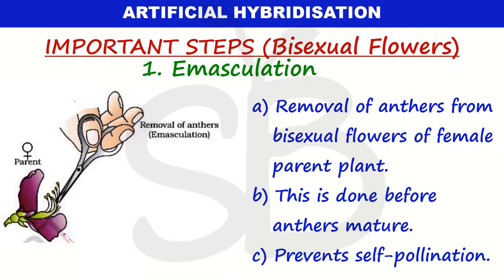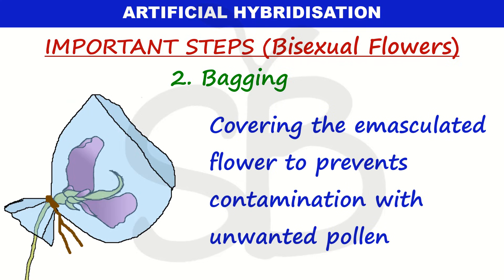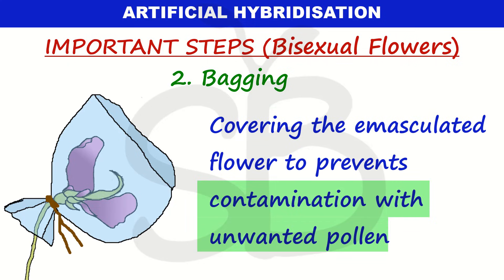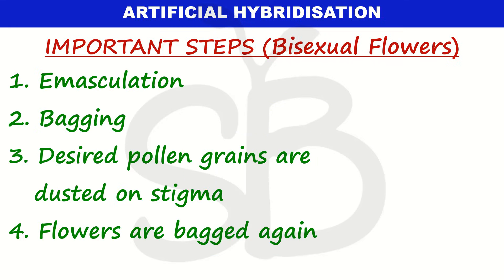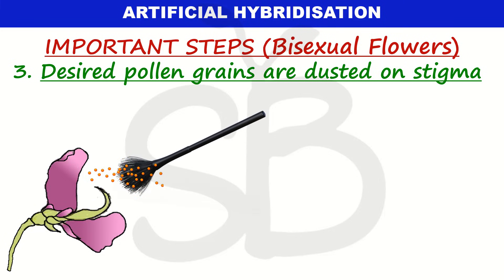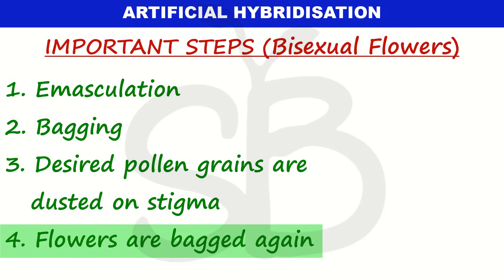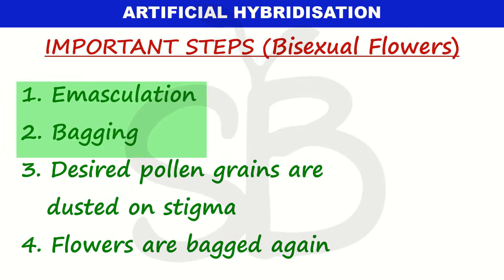After emasculation, the flower is covered with a bag — this is called bagging — and it prevents contamination with unwanted pollen. The third step is that desired pollen grains are dusted on the stigma of the female flower. The last step is that flowers are bagged again after pollination.